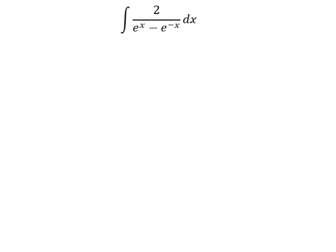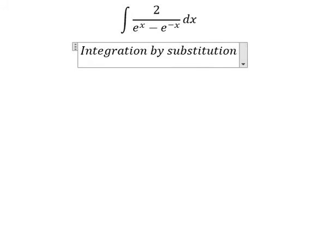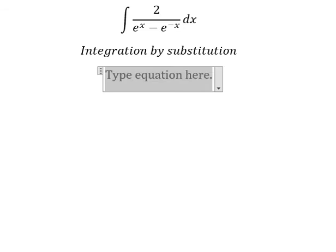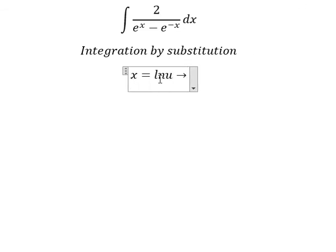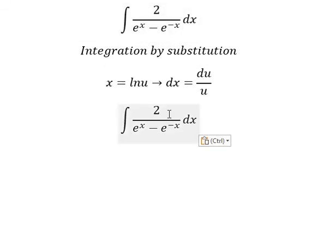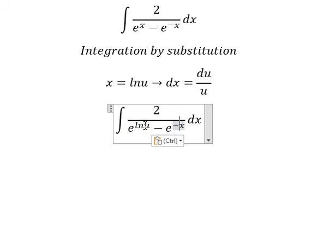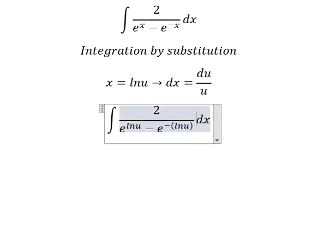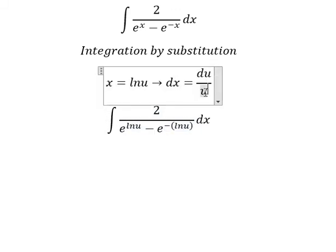Next, we need to use integration by substitution. I will let u equal to e to the power of x. If we take the first derivative of both sides, we get ds equals du over u, so I will substitute this in to change the x terms.